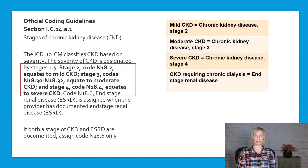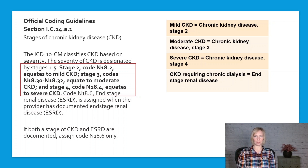In the case of end-stage renal disease, it can be coded if it is specifically documented or if chronic kidney disease requiring chronic dialysis is also documented, because chronic kidney disease requiring chronic dialysis is an inclusion term for this code. If both a stage of CKD and end-stage renal disease are documented, only the code for end-stage renal disease should be assigned.